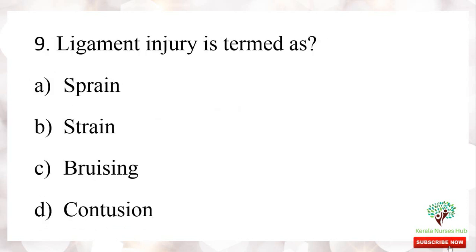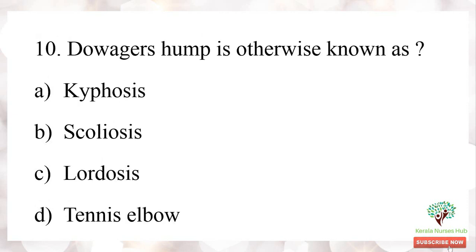Next question: ligament injury is termed as what? The options are sprain, strain, bruising, and contusion. Ligament injury is known as sprain. Last question: dorsal hump is otherwise known as — options are kyphosis, scoliosis, lordosis, and tennis elbow. Dorsal hump is otherwise known as kyphosis.